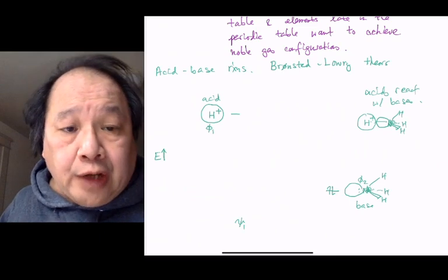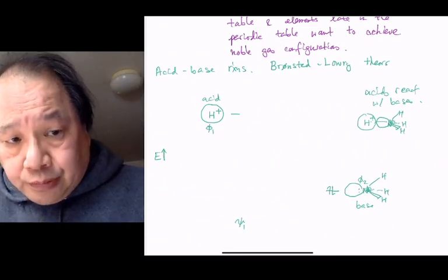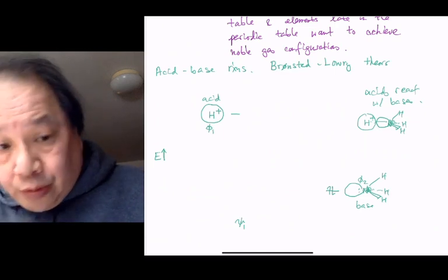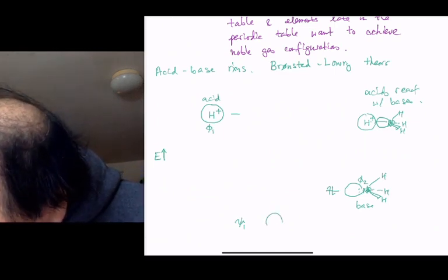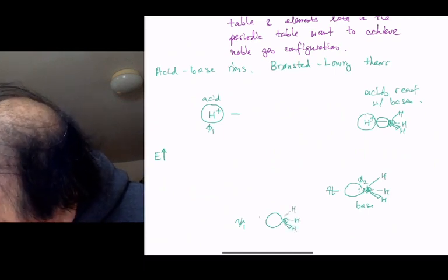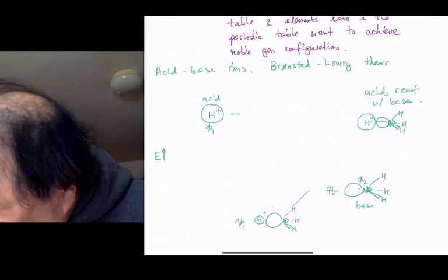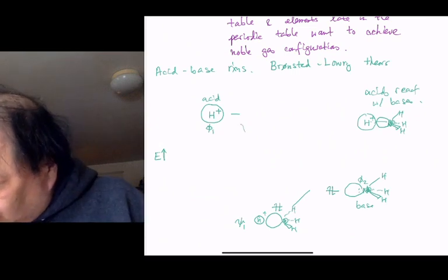And so psi 1, I'm drawing it right here. Is psi 1 mainly going to be on nitrogen, the more electronegative atom, or hydrogen? Put it in chat. It will be more on the lower energy orbital. So I'll make it big on the nitrogen side and smaller but in phase on the H+ side. But that is lower in energy. That's psi 1.